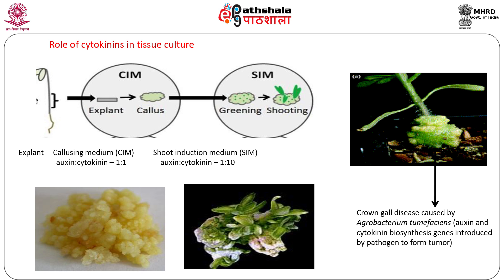If callus is transferred to a medium having high concentration of cytokinin, new shoot buds develop from the callus tissue, which give rise to shoots. This process involves the de novo formation of meristems in response to cytokinin signaling. This property of cytokinins is exploited in the tissue culture technique for micropropagation of plants.